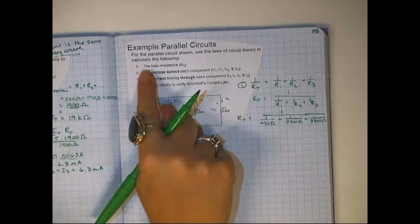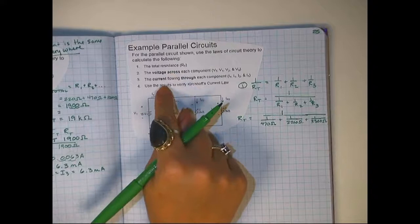Okay, this is our example for parallel circuits, and the first thing it asks us to do is to find the total resistance. And total resistance is a little more complicated for parallel than it was for series.